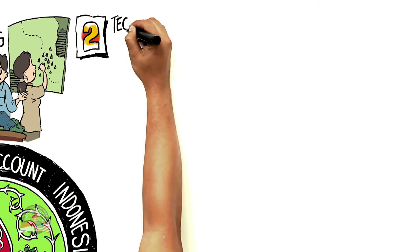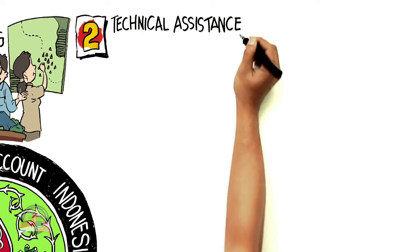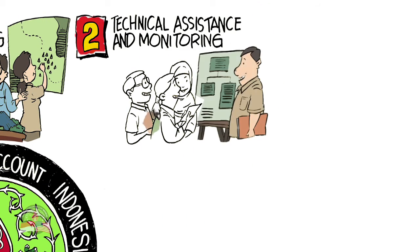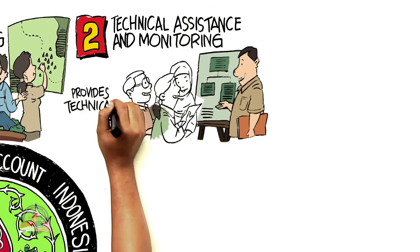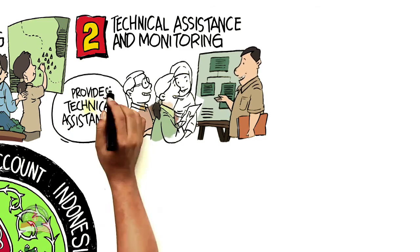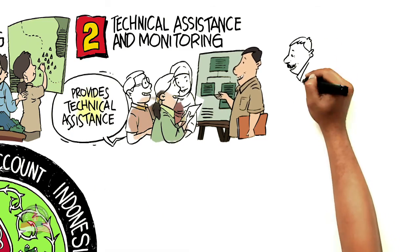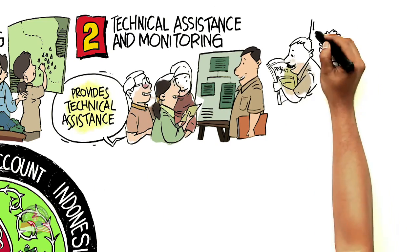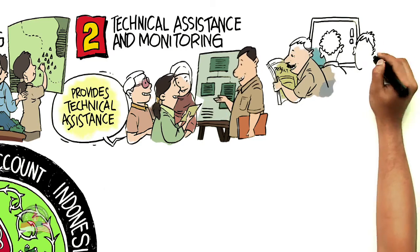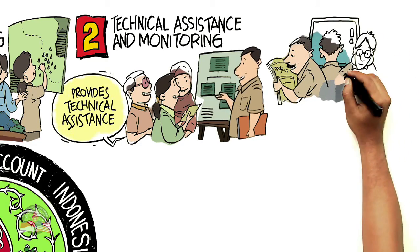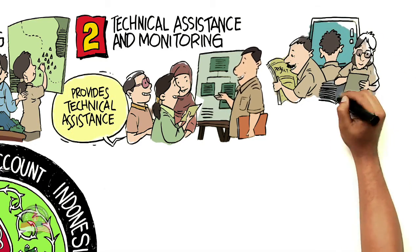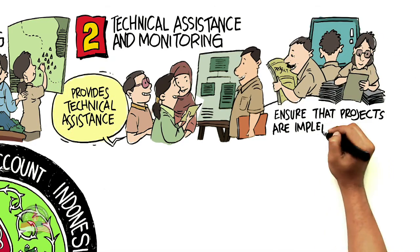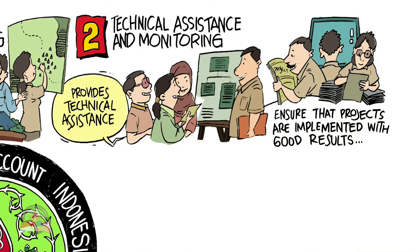Second, Technical Assistance and Monitoring. This activity provides guidance in technical and monitoring to ensure that projects supported by Green Prosperity Project can be carried out in accordance to the needs with the anticipated results.